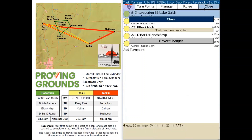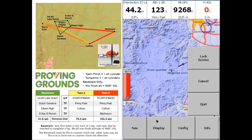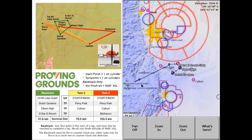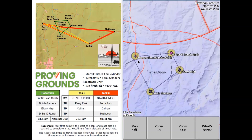We're going to tap on Close and Close again. Lastly I'm just going to pan to the task and make sure it looks okay. I'm going to zoom in a bit here. We see intersection 83, then to Dutch Gardens, to Albert High, D Bar D, and then back to intersection 83. So that's all you need to do to load maps, waypoints, airspace, and Proving Grounds tasks into XSOR.